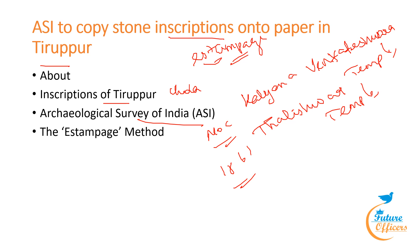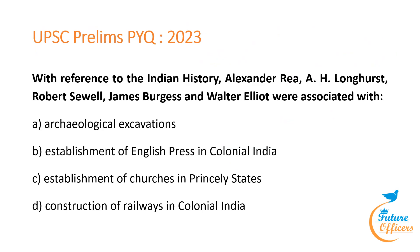Alexander Cunningham, the first Director General of ASI, is also known as the father of Indian archaeology. The estampage method involves creating a detailed and exact replica of inscriptions by placing inked paper over the engraved surface and pressing it to transfer the inscription impression. This technique captures fine details of the original text, making it easier for scholars to study and analyze inscriptions without directly handling or disturbing the original artifacts. It is commonly used in epigraphy for documentation and preservation purposes.